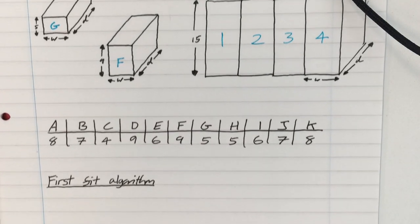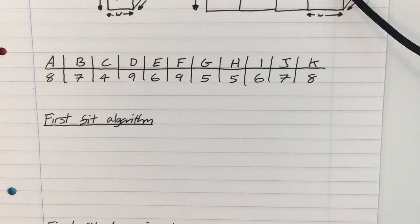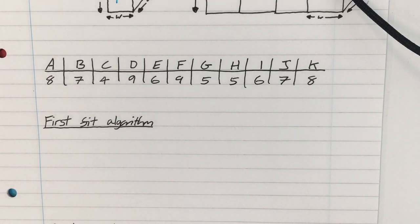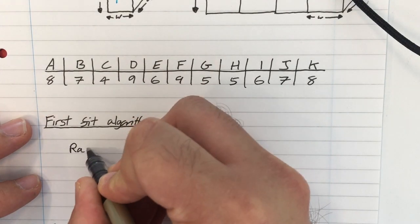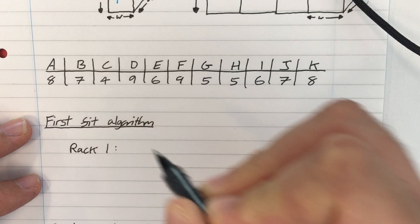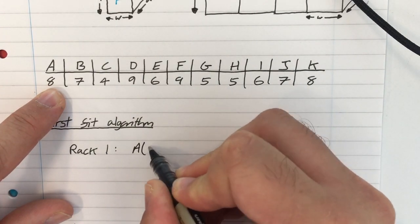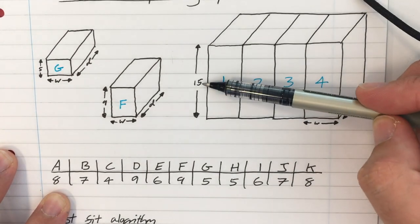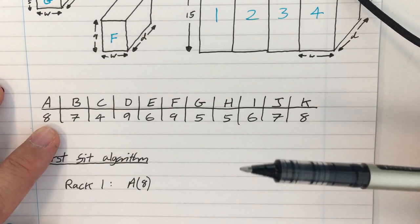The first one is called the first fit algorithm. It's very self-explanatory. You just take the first box, and you put it in the first box that has the available space. So I need to open up rack 1, and I'm going to pick up box A, and I'm going to put it in rack 1.